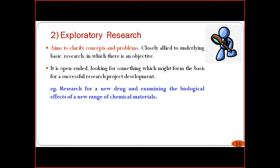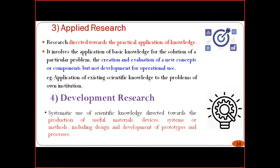The second type, exploratory research, aims to clarify concepts and problems. It is also open-ended, looking for something that might form the basis for a successful research project. For development, it is closely allied to underlying basic research in which there is an objective — for example, research for a new drug or examining the biological effects of a new range of chemical materials, which relates to finding a COVID-19 vaccine.